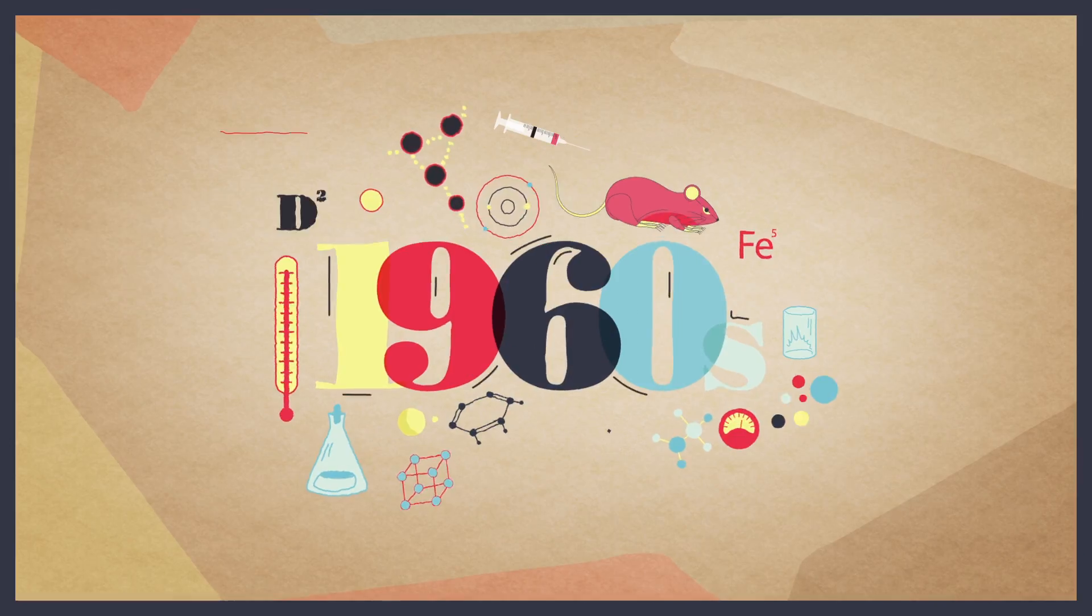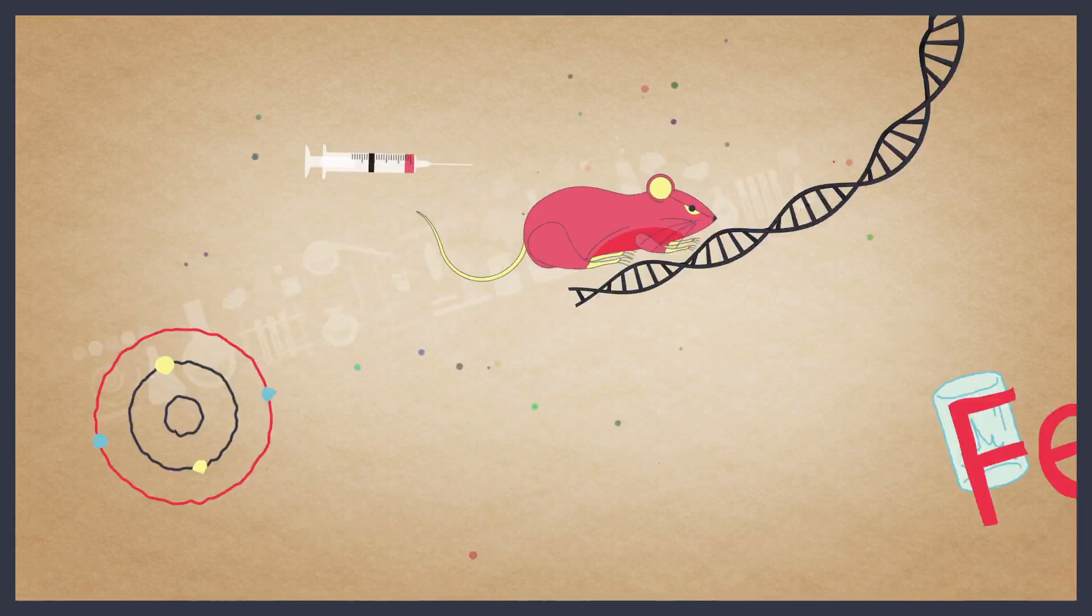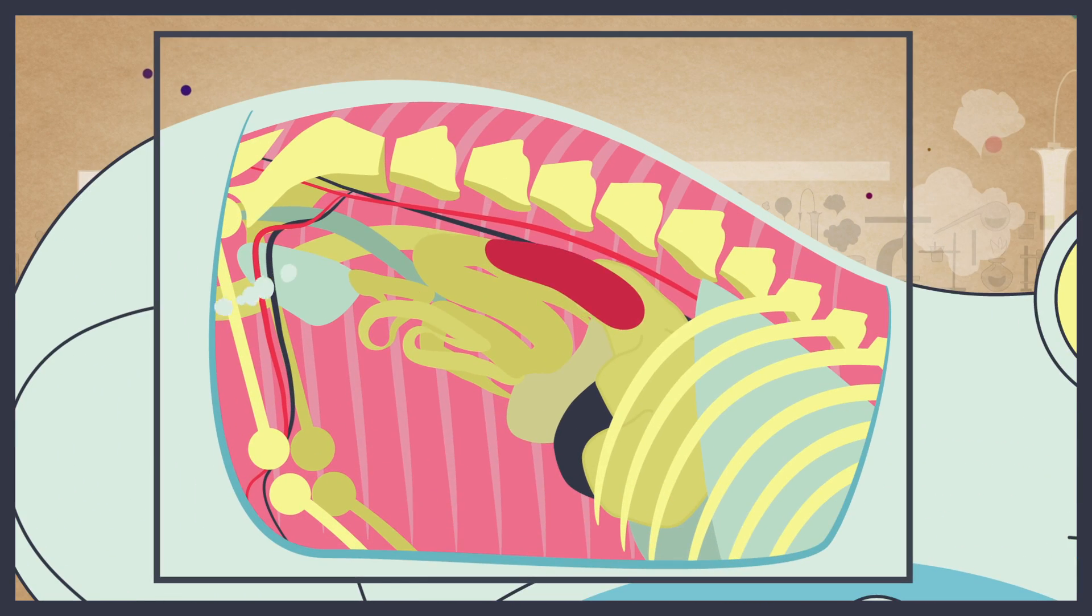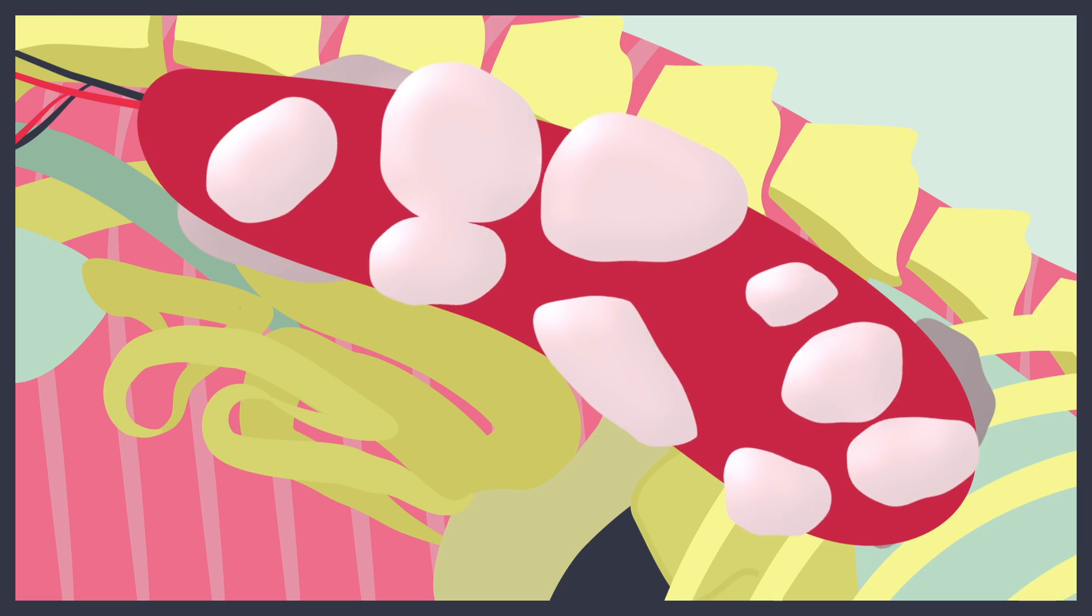In the early 1960s, it was shown that if bone marrow was taken from one mouse and transplanted into another, rare and specialized cells could travel to the spleen where they would divide and form small colonies.